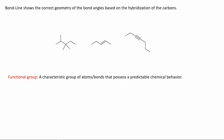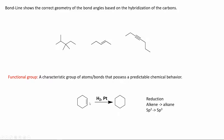We're also going to be looking at a variety of functional groups. A functional group is a characteristic group of atoms or bonds that possesses a predictable chemical behavior. Specific compositions of carbon, nitrogen, oxygen, and sulfur will each be different functional groups, and you'll be expected to memorize and identify these throughout the semester. For example, this reaction is a reduction using hydrogen. We have an alkyne on the left, and in the presence of hydrogen and platinum, the alkyne can be reduced to an alkane — going from sp2 hybridized to sp3 hybridized carbons.